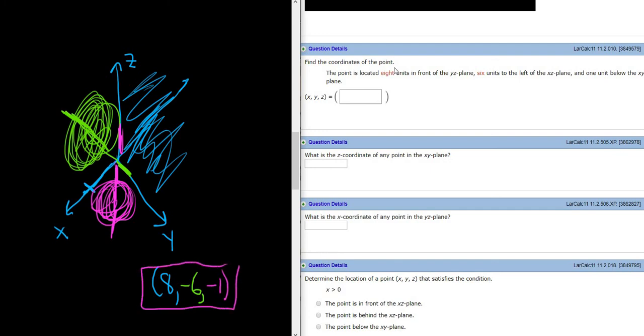Let's double check our work. 8 units in front of the YZ plane. So this is the YZ plane. 8 units in front will put us at X equals 8. Check.